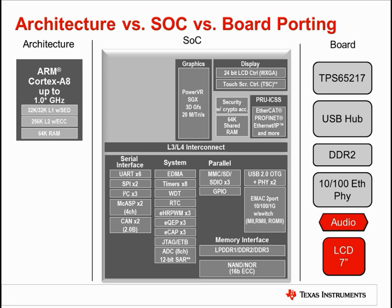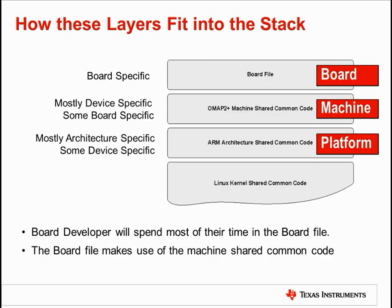Also, the source code for the Linux kernel is organized by three layers of architecture, system on chip, and board. In the context of the Linux kernel source code, these layers are given the names platform, machine, and board respectively. These layers are organized into separate directories, which is helpful during the porting process as it separates source code that is unlikely to need modification from that which is more likely to need to be modified. These three layers sit atop the Linux kernel shared common code, which is the portion of the Linux source code that is unchanged regardless of the hardware Linux is running on, be it an x86 desktop or an AM335x embedded device.